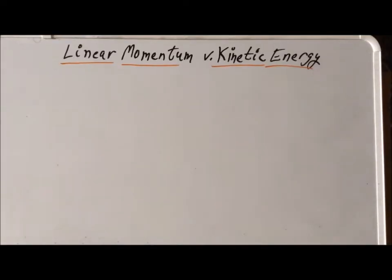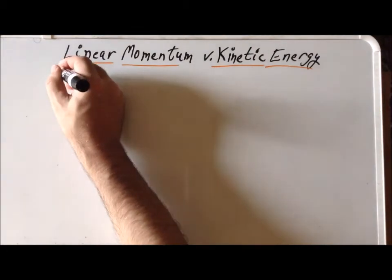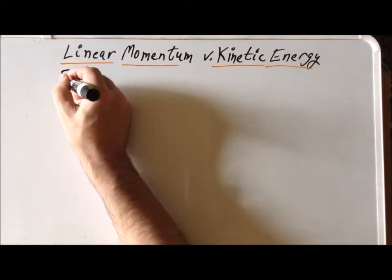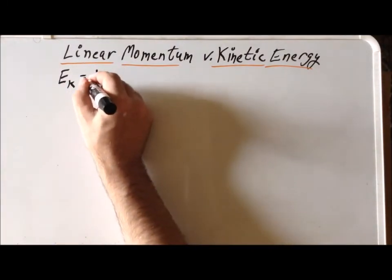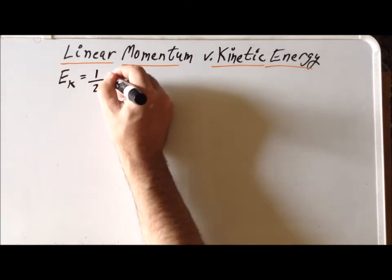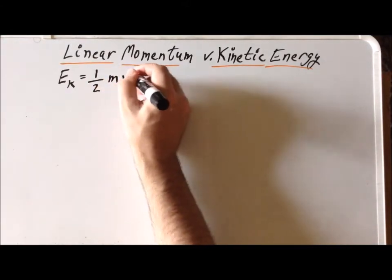Hello, in this video we are going to derive expressions for the kinetic energy in terms of the linear momentum for both classical mechanics and for quantum mechanics. First, we'll recall two important relationships from classical mechanics: we can calculate the magnitude of the kinetic energy, that's equal to one-half times the mass of the object times its velocity squared.